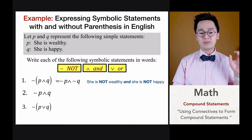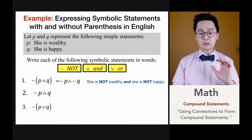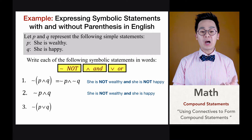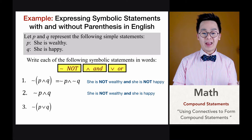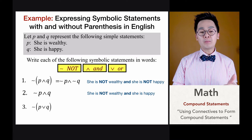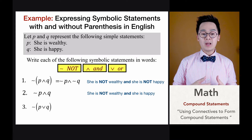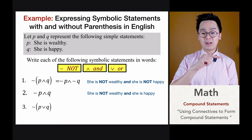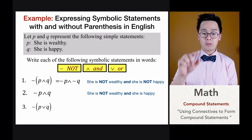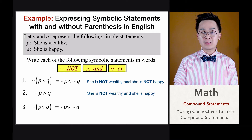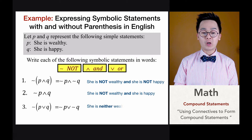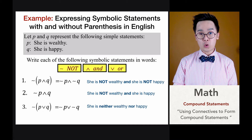For problem number two, we have the statement ¬P∧Q. We negate statement P ('she is wealthy') and copy statement Q using the 'and' operation, giving us: 'she is not wealthy and she is happy.' For problem number three, just like problem one, we distribute the negation symbol, but this time using the 'or' operation. The translation is not P or not Q — in English: 'she is neither wealthy nor happy.'